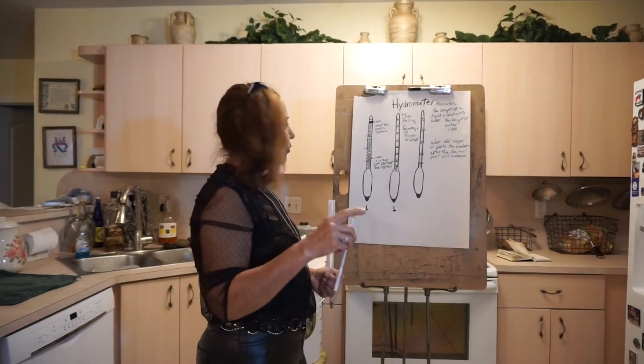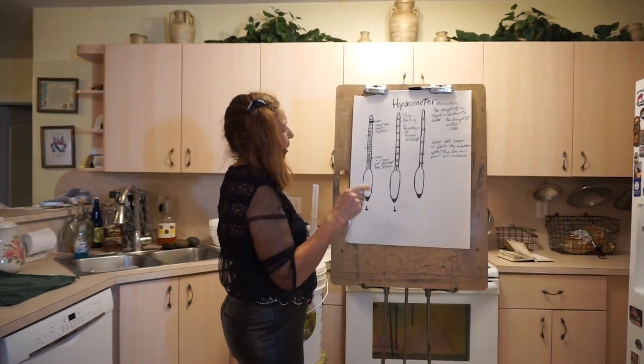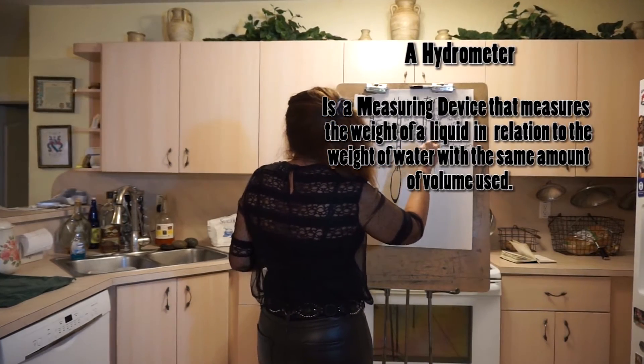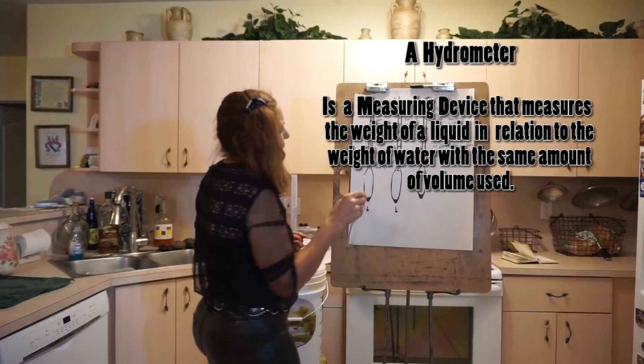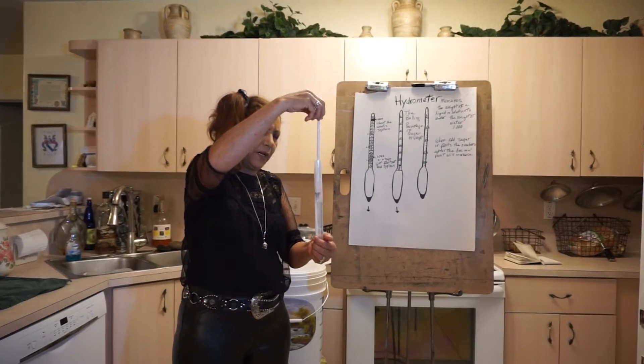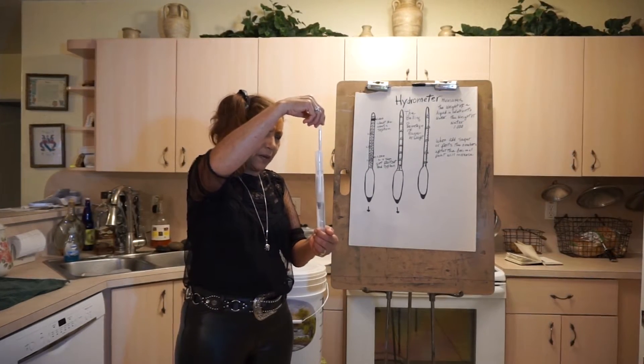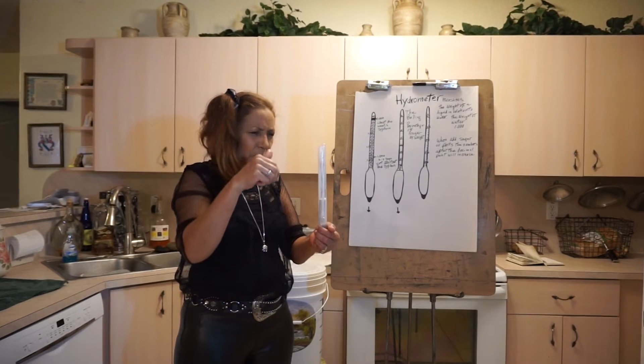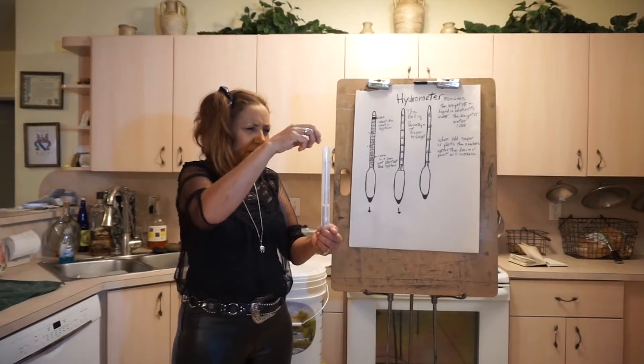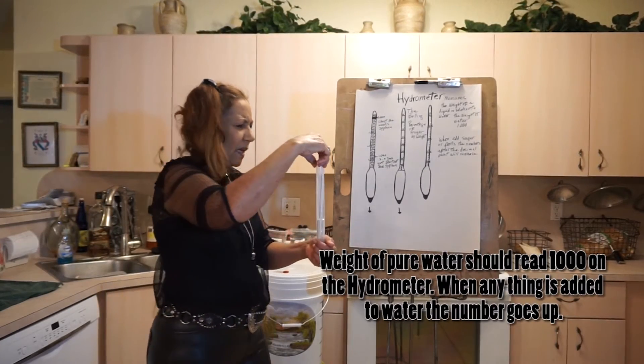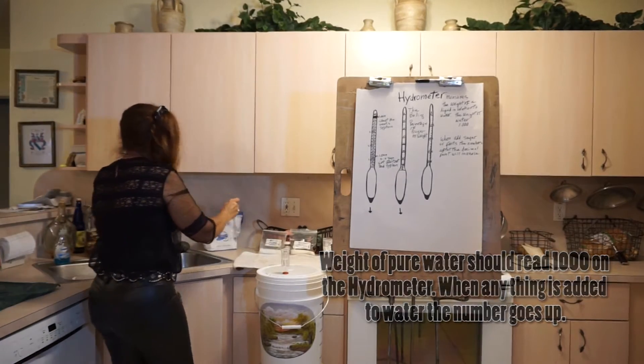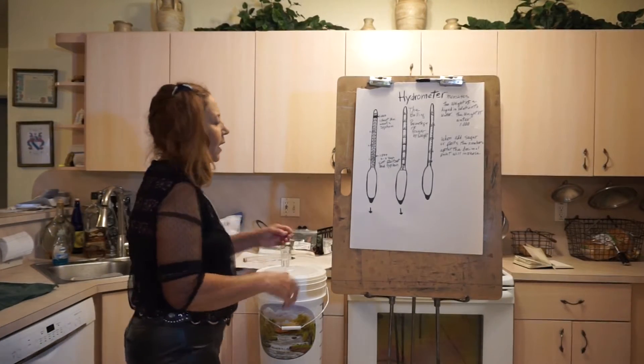Okay, so you can understand the hydrometer. The hydrometer is going to measure the weight of a liquid in relation to water. The hydrometer is at 1000 right there, that's when it's clear water.